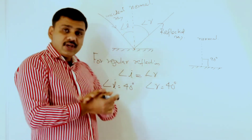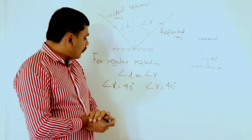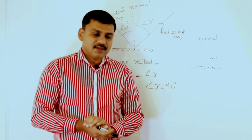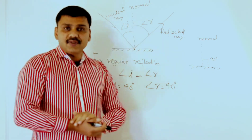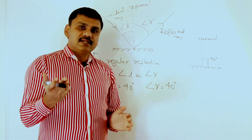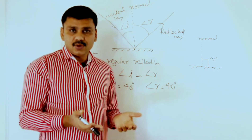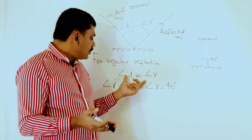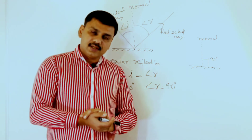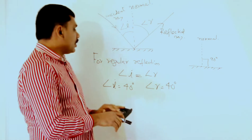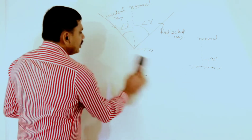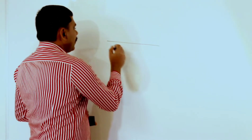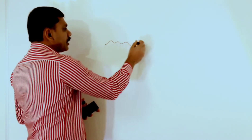In the case of irregular reflection, the angle of incidence will not be equal to the angle of reflection. When a ray falls on a rough surface, it can reflect in any direction and does not obey the relationship between angle of incidence and angle of reflection. To draw the diagram of irregular reflection, we draw a rough surface.